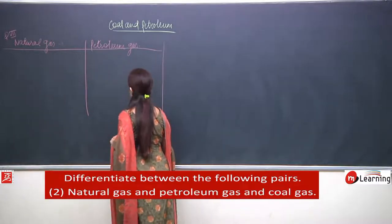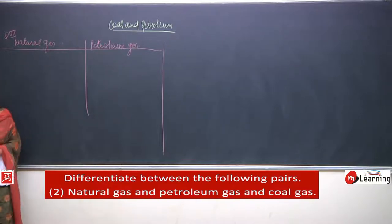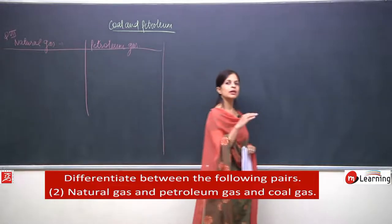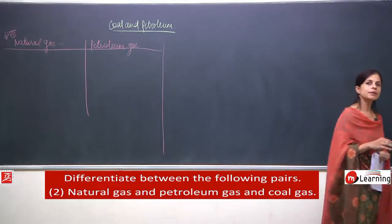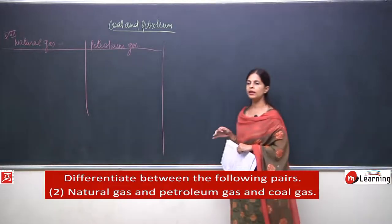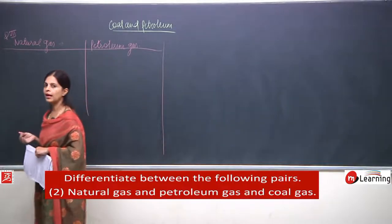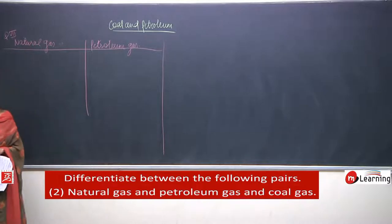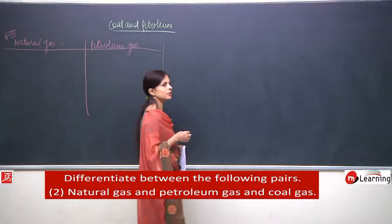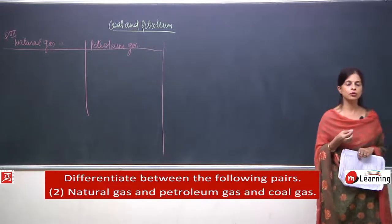How do we find natural gas? Natural gas can be formed along with the petroleum — it floats at the surface. Sometimes natural gas is available separately, where only the natural gas is there. In both ways, natural gas is available. Petroleum gas, on the other hand, is formed during the fractional distillation of crude oil.